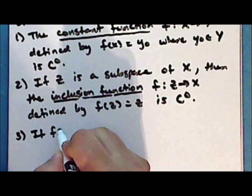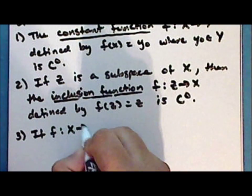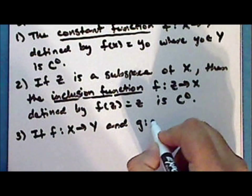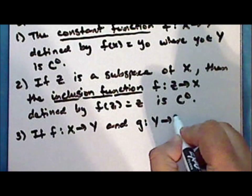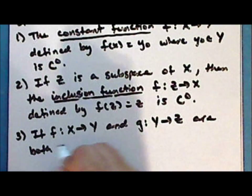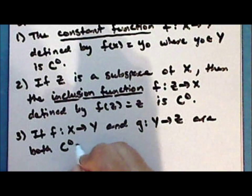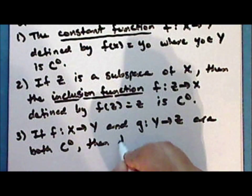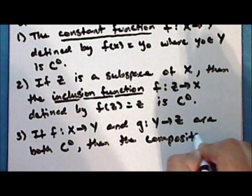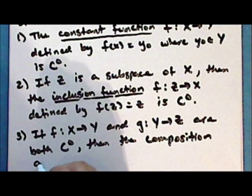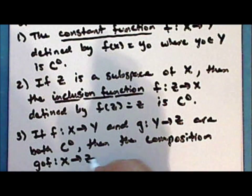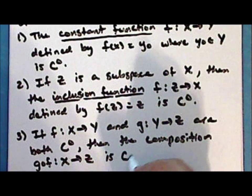If the function F mapping the space X into the space Y, and the function G mapping the space Y into the space Z, are both continuous, then the composition G of F, which is a map from the space X into the space Z, is continuous.